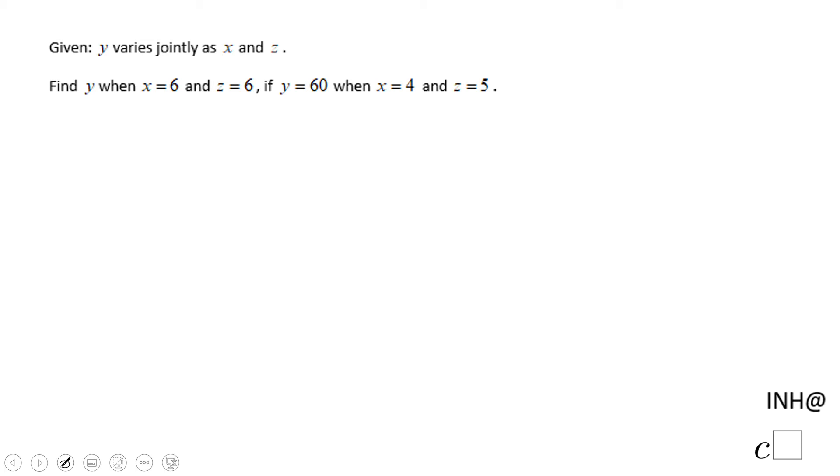Welcome back to Need Help at C Squared. In this example, we have a joint variation where Y varies jointly as X and Z, and we are asked to find Y when X equals 6 and Z equals 6. But first, let's take a look at the last part.